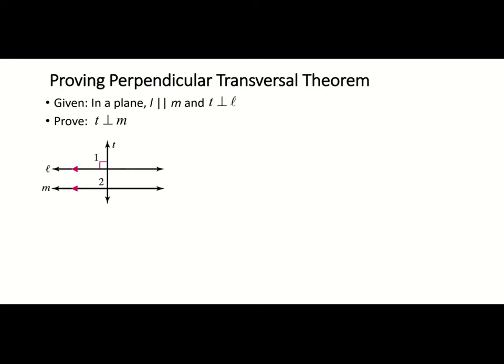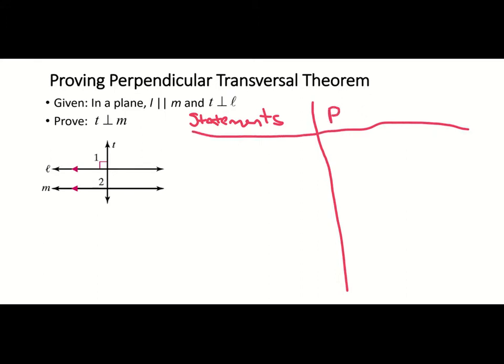Next we're going to look at a proof where we prove the perpendicular transversal theorem using a two-column proof with statements and reasons. When we write our proof, we always start with our given. So we know that in a plane, l is parallel to m, and I'll write that as my first given.